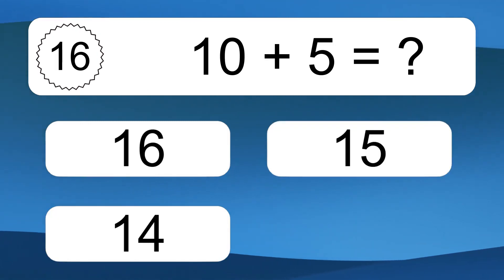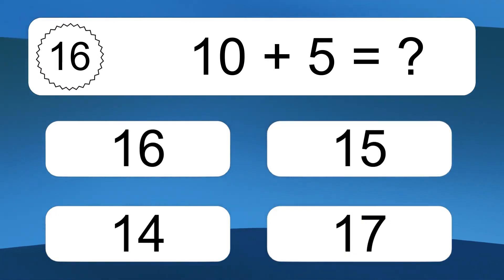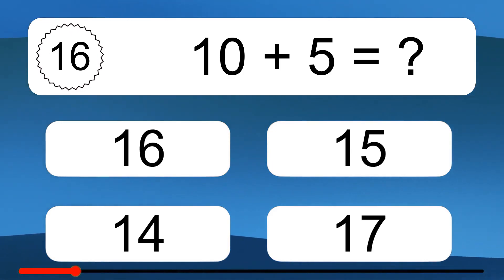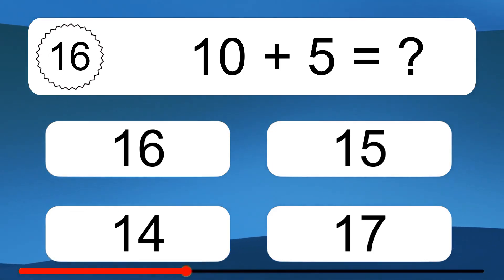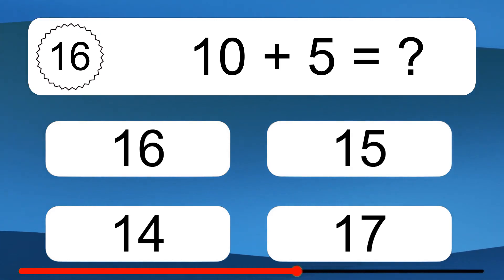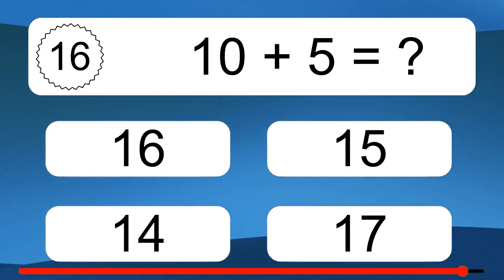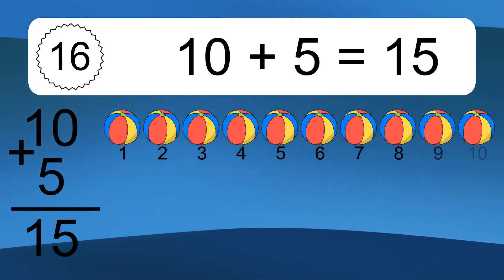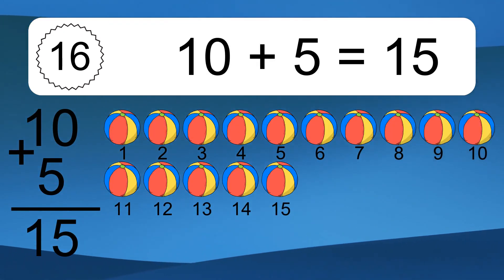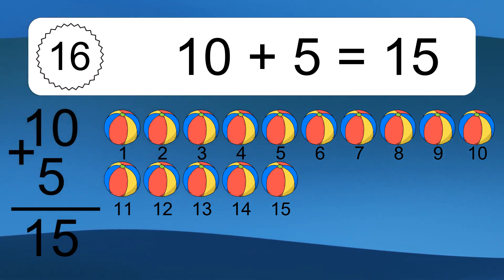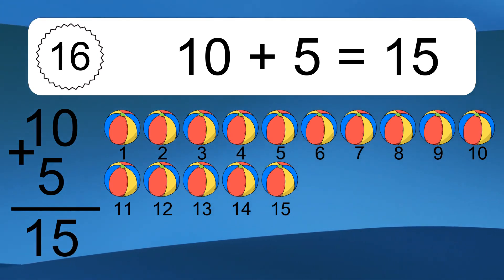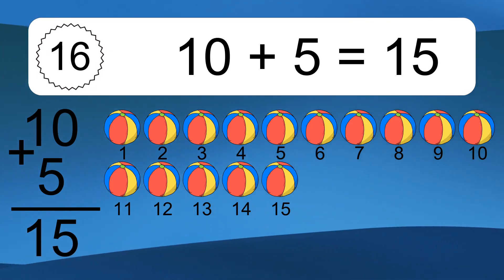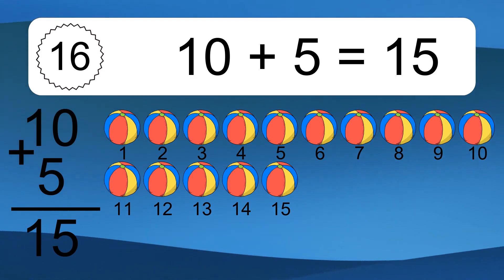10 plus 5 equals what? 10 plus 5 equals 15. Let's count it: 1, 2, 3, 4, 5, 6, 7, 8, 9, 10, 11, 12, 13, 14, 15.